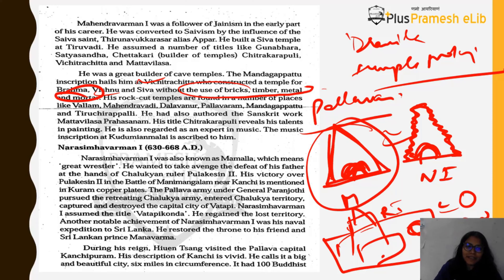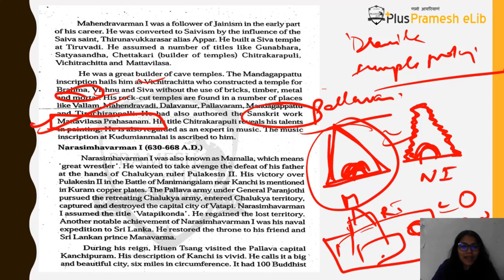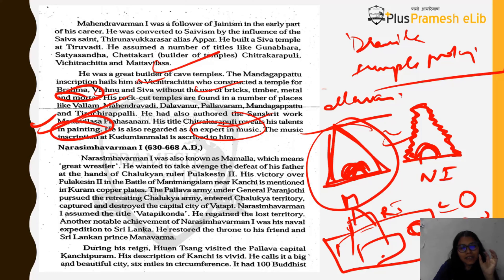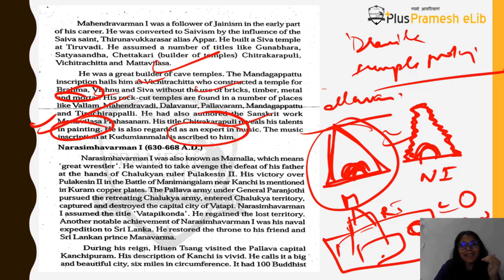His rock-cut temples are found at Vallam, Dalavanur, Pallavaram, Mandagapattu, Tiruchirappalli, and other places. He also authored a Sanskrit work called Mattavilasa Prahasanam — remember this for exams. His title Chitrakara Puli reveals his talent in painting. He is also regarded as an expert in music — similar to how Samudragupta played the Veena, Mahindra Varman I was also multi-talented. The music inscription found at Kudumiyamalai is ascribed to him.